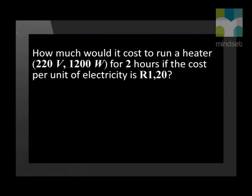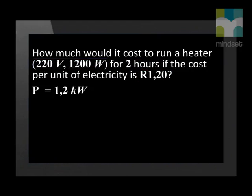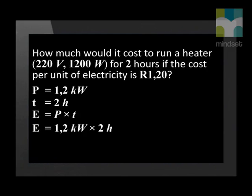Let's look at another example. How much would it cost to run a heater rated at 220 volts and 1200 watts for 2 hours, if the cost per unit of electricity is R1.20? The power given is 1200 watts. We need to convert into kilowatts, so that is 1.2 kilowatts. We have also been given the time of 2 hours. Using the equation energy equals power times time, the energy used by the heater is 1.2 multiplied by 2, which gives us 2.4 kilowatt hours.